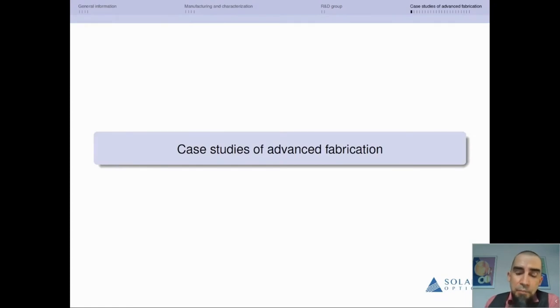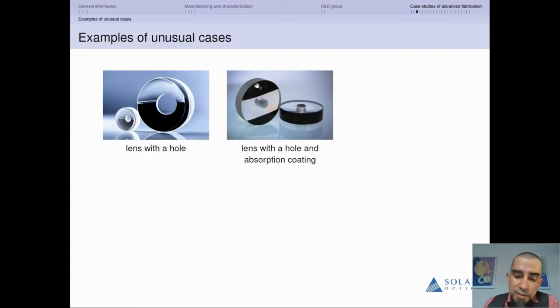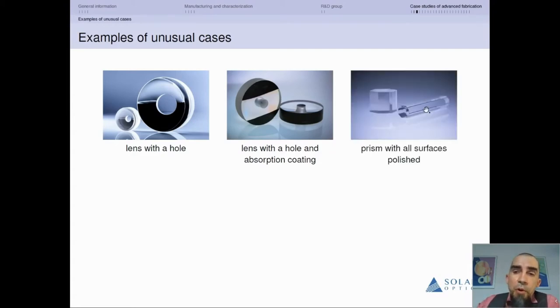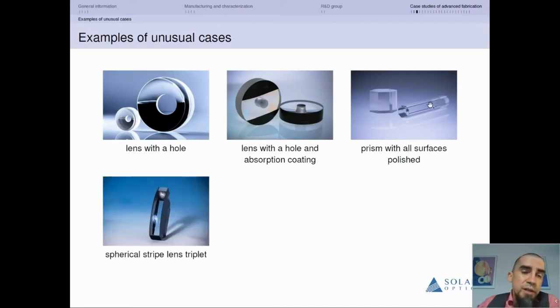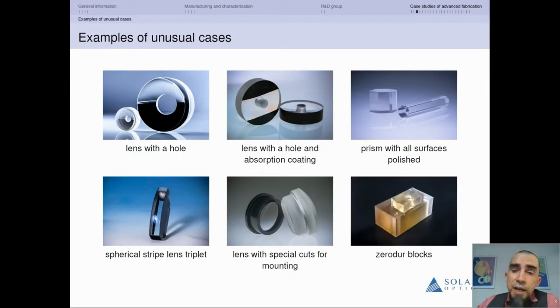That was a general picture of Solaris, but now I will discuss more sophisticated optics that we do. Examples of unusual cases, at least for us, include optics with a hole inside, optics with holes and coatings, absorption coatings. We do prisms which are polished from every side. We do aspherical optics assemblies like Fresnel achromats. We fabricate lenses with special shapes often required by customers for precise assembly procedures, and we can fabricate shapes that are not rotationally symmetric. This is an example of a Zerodur block fabricated at Solaris.